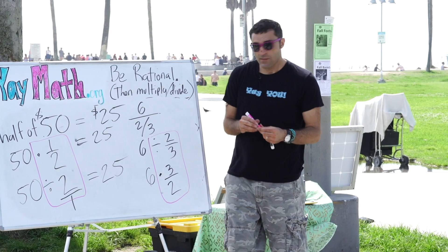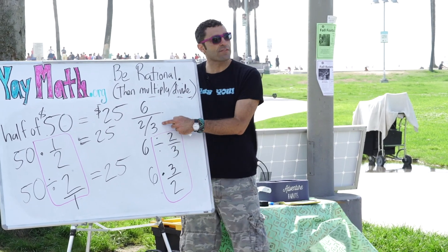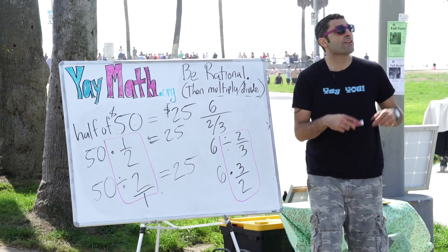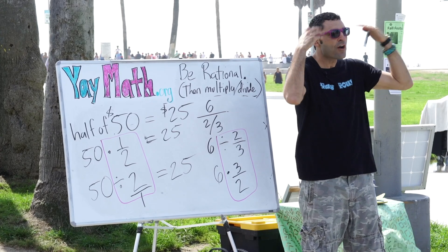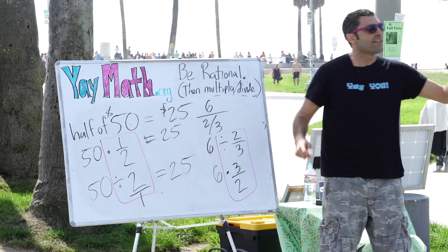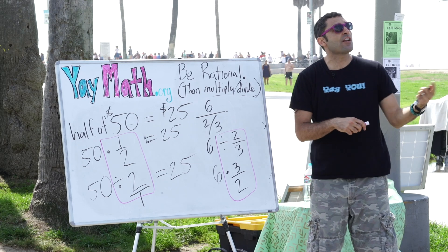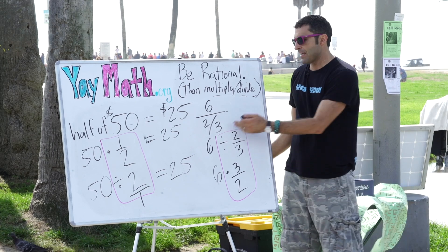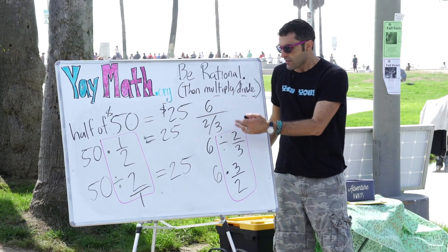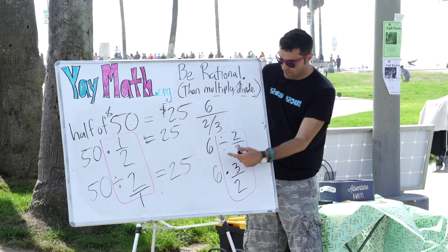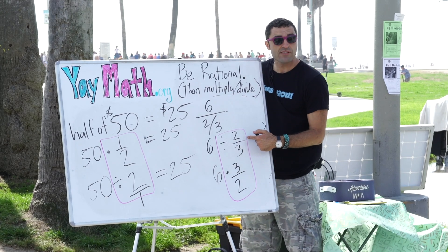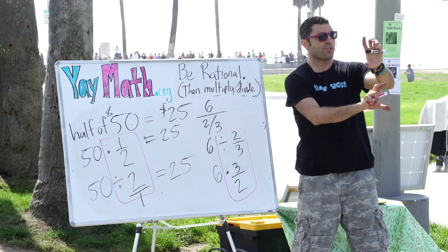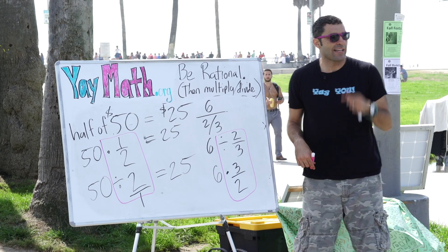The point is: do you happen to know off the top of your head how many times two-thirds goes into six? I don't know that right away. It's expanding consciousness, basically. Rather than think of it like a division problem — six divided by two-thirds — you could think of it like a multiplication problem, which is six times the reciprocal. That's what we're doing. That's the idea.